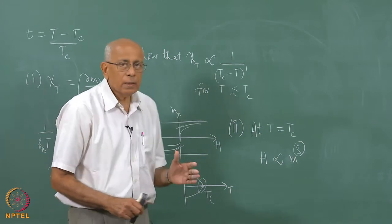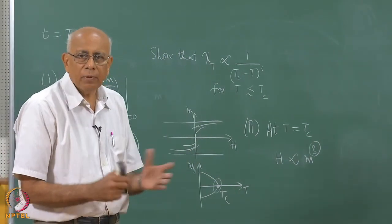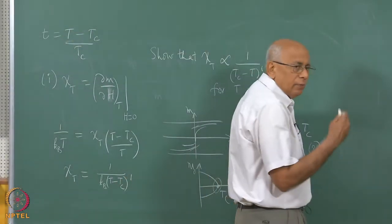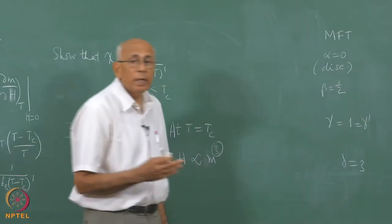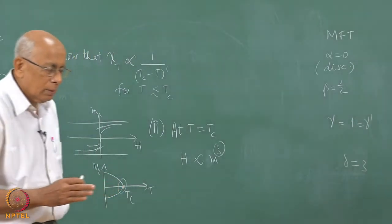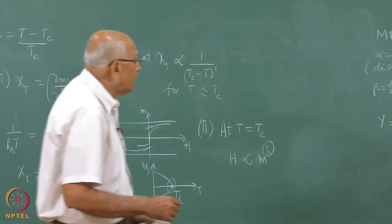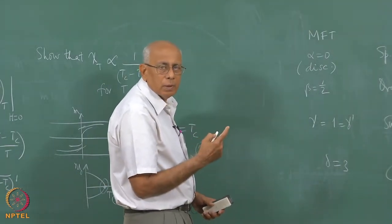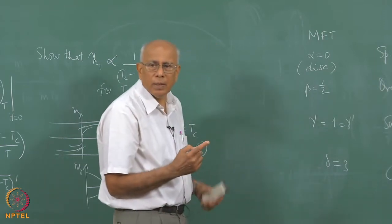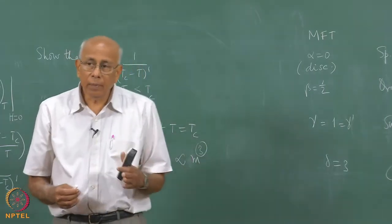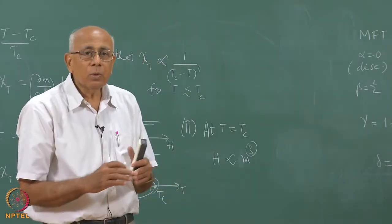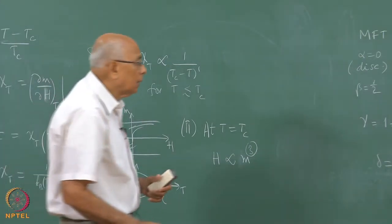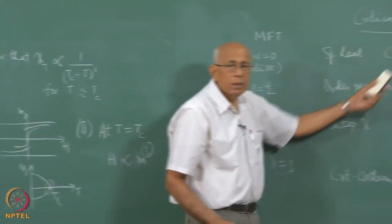Returning to experimental facts: in real life, looking at three-dimensional magnets or real liquids, the exponents are very different. Alpha is very close to zero, some small number like 0.1 or less. In the two-dimensional Ising model, alpha is zero but the specific heat diverges logarithmically — a log divergence. The specific heat depends on what is kept constant: Cv or Cp or C at constant field, depending on the system.